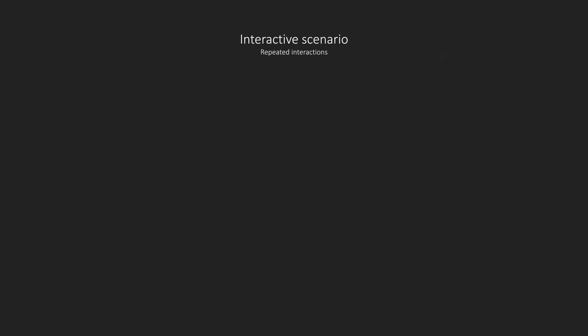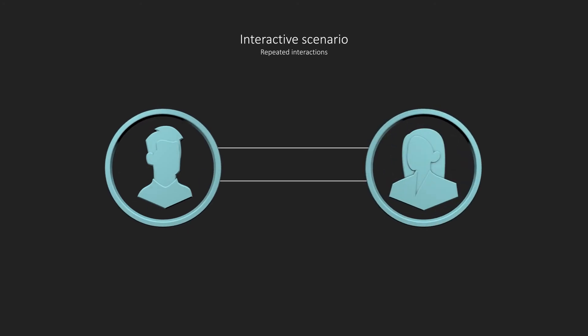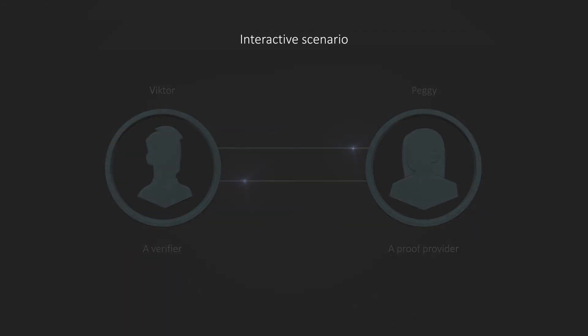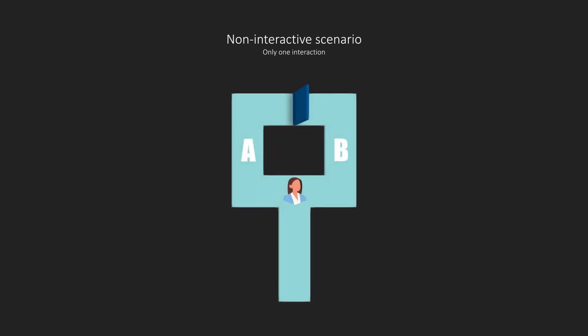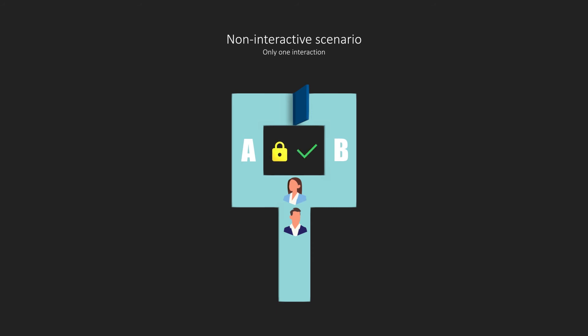This is an interactive case of zero-knowledge proof, with repeated interactions between Peggy, who is the proof provider, and Victor, who is the verifier. Now let's make this protocol non-interactive, which means there will only be one attempt. Let's imagine that Victor stands directly in front of the junction of path A and B. If Peggy enters through one of the paths and exits through the other, she will have opened the door, which implies that she must know the secret word. We can see that there is no need to repeat the protocol.